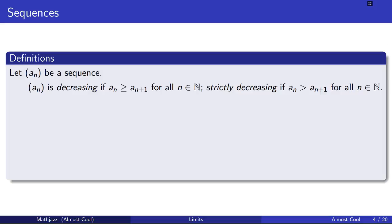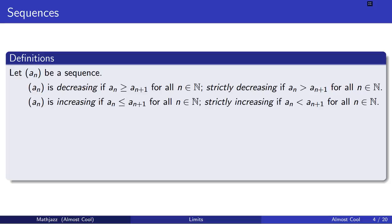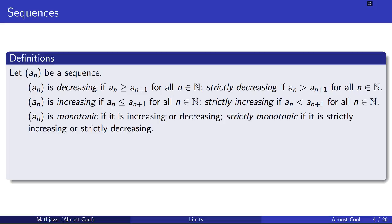Now we're going to define several properties that sequences may or may not have. The first is decreasing: a sequence is decreasing if a sub n is greater than or equal to a sub n plus 1 for all natural numbers n. It's strictly decreasing if a sub n is strictly greater than a sub n plus 1 for all n. Likewise, a sequence is increasing if a sub n is less than or equal to a sub n plus 1, and strictly increasing if we make it a strict inequality. If a sequence is either increasing or decreasing it is monotonic, and if strictly so, it is strictly monotonic.